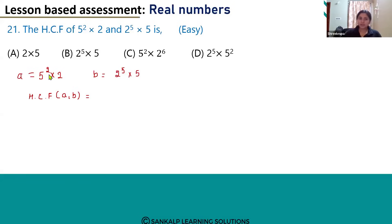We have to take the common numbers as well as their minimum power, or the least power of the common numbers.